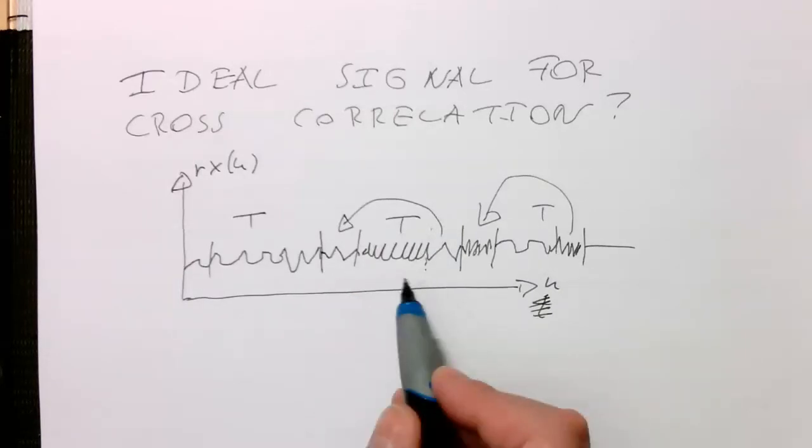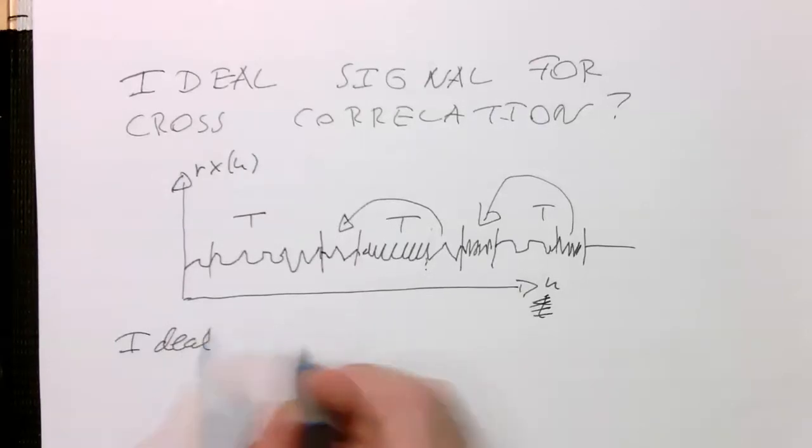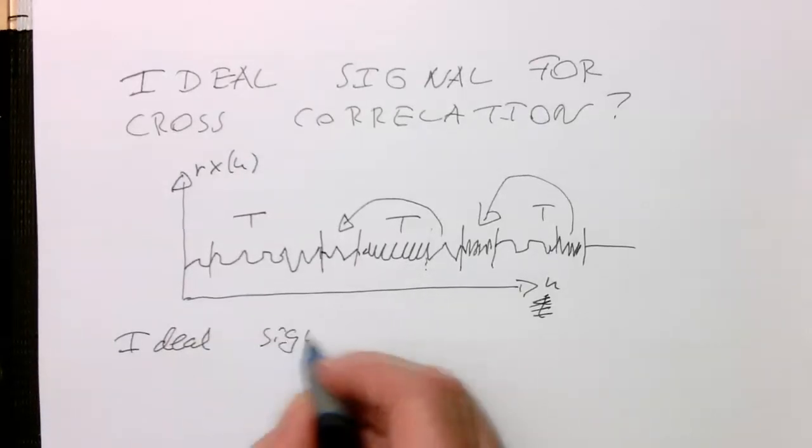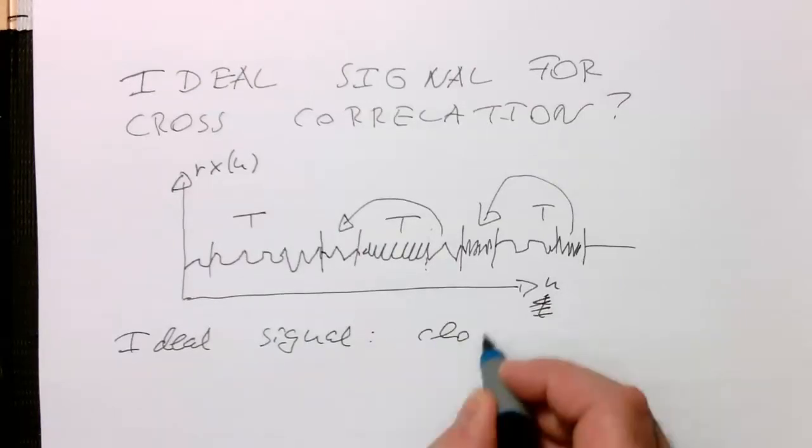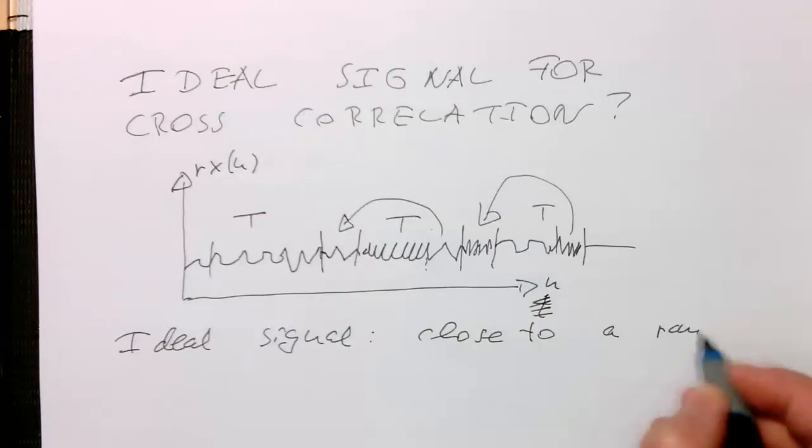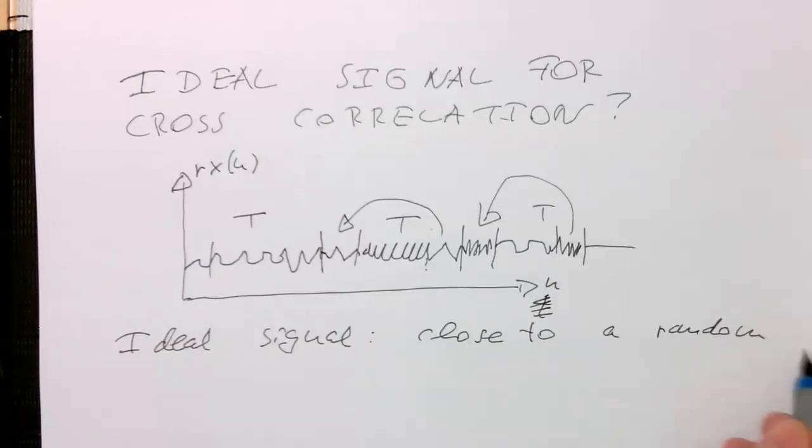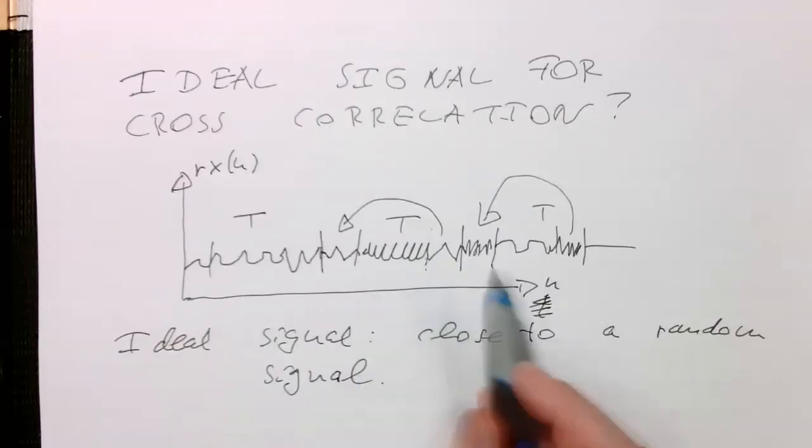The ideal signal should be essentially something close to a random signal, close to a random signal. Because then we have unique signatures for the symbol start.